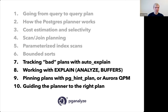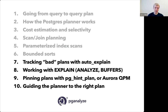Then we'll switch gears and talk about how to track bad plans with auto_explain. We'll also show pganalyze and how it can help you do this, though you don't need to use pganalyze — it's just a convenient way. We'll talk about EXPLAIN ANALYZE BUFFERS and how to interpret that output. At the end, we'll cover how to pin plans with pg_hint_plan or Aurora's Query Plan Management, and then how to guide the planner to the right plan. We need to understand the planner first before we can pin a plan or guide it effectively.